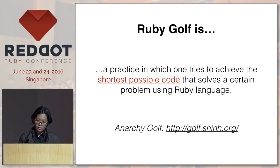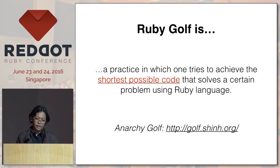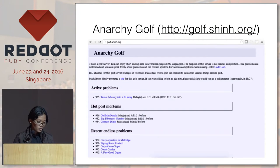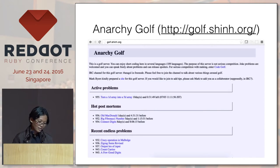But this practice is not exclusive to Ruby. You can also see it in Perl, JavaScript, and many other languages. And if you're interested, you can visit the Anarchy Golf site at golf.shinh.org. The website looks a bit ancient, but there are more than 900 problems in there, so you can check it out.